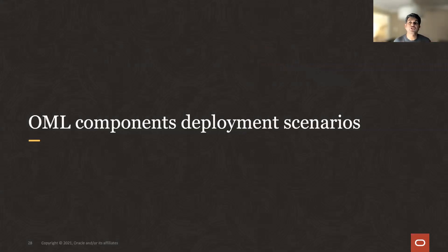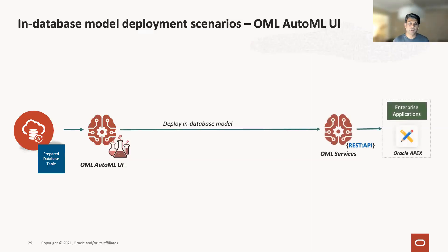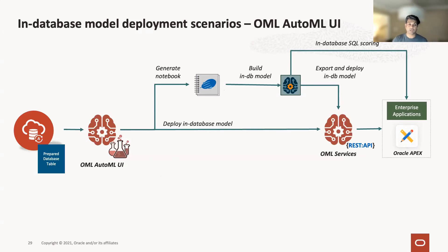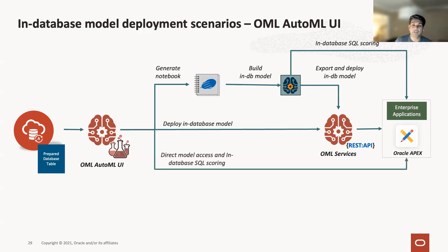There are different component deployment scenarios using AutoML. The first is straightforward: you go to AutoML, generate your notebook, it uses a built-in database model, you export this model to OML services, and you can use in-database SQL scoring and deploy into an Apex app. This is the simplest and most common way I anticipate users will actually use this — requires the least amount of work and code. If you're a power user, you can still do direct model access and in-database scoring by directly accessing without using the notebook.